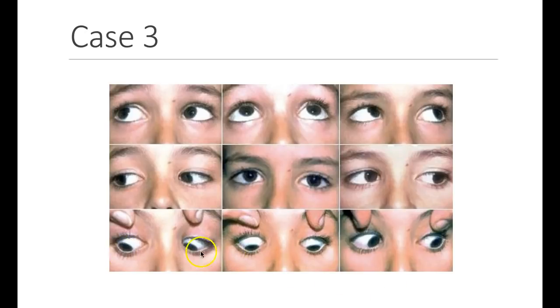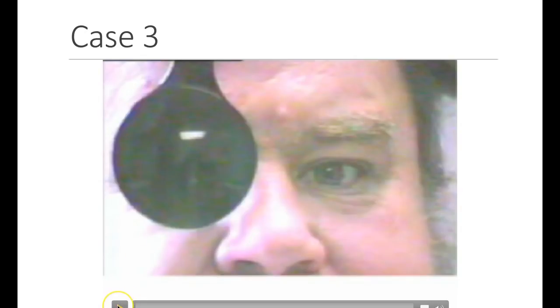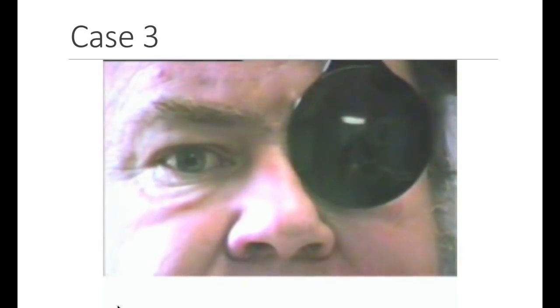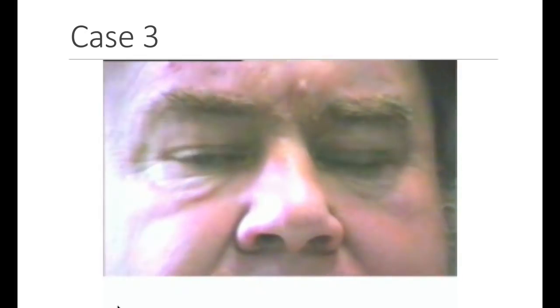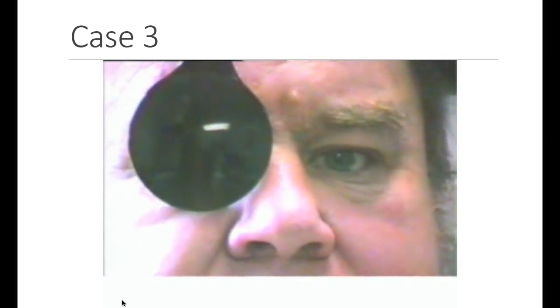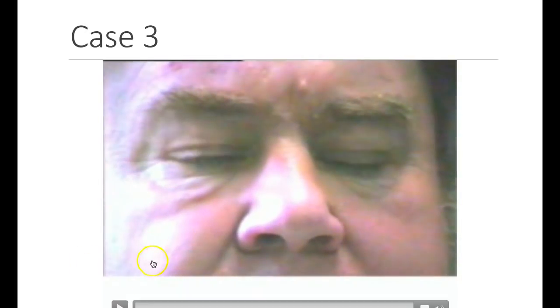When looking to the right, function is completely symmetric. It is a very subtle finding, and sometimes you have to perform what's called a cross cover examination to really see the defect. Cross cover removes binocular fixation so you can see the corrective saccade that occurs due to weakness of the muscle — when you cover each eye the patient must refixate, and both eyes move, demonstrating the fourth nerve weakness. That is it for this particular lecture; please see my next lecture for further discussion of gaze.